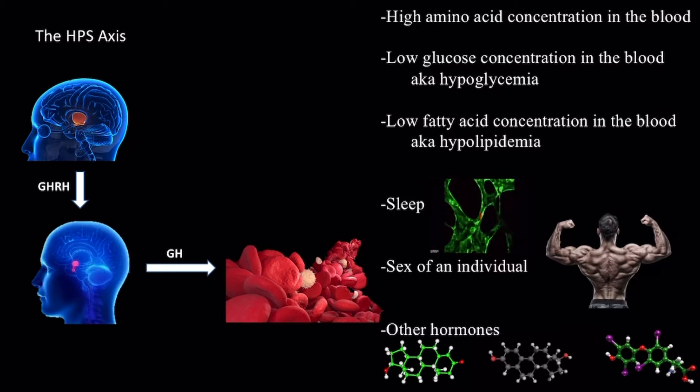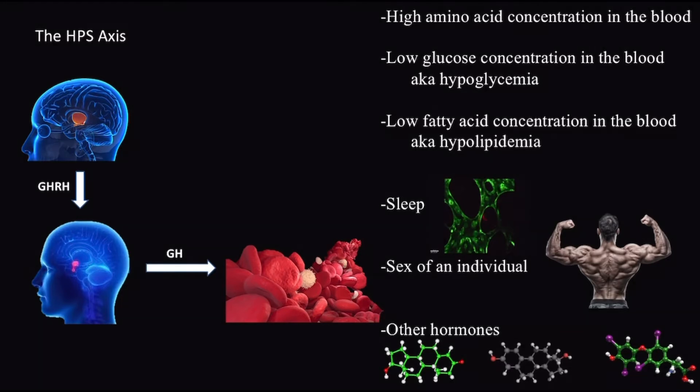All these factors that lead to increased release of GHRH from the hypothalamus will subsequently lead to increased release of GH from the anterior pituitary gland. Now that we have discussed what stimulates GHRH and GH production, let's take a closer look at GH, its targets, and its effects.